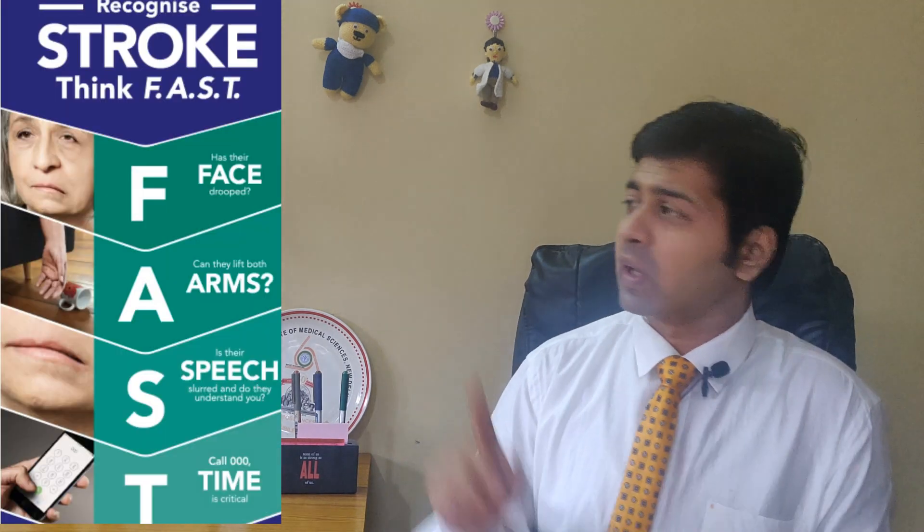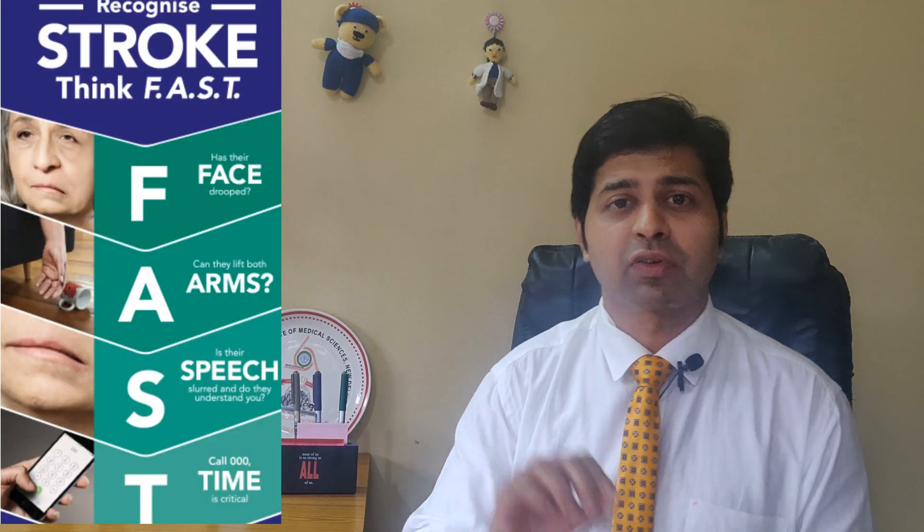Let's understand how you can identify subtle signs of stroke so you can get the patient to hospital in time, before permanent brain damage occurs. There is a famous acronym: FAST. F stands for facial asymmetry — is there any asymmetry in the face? Just like there is paralysis of the upper limb, the body, or the lower limb, there is also paralysis of the face. The stronger, normal side tries to pull the angle of the mouth, while the weaker, paralyzed side fails to resist it — resulting in deviation of the angle of the mouth to one side.